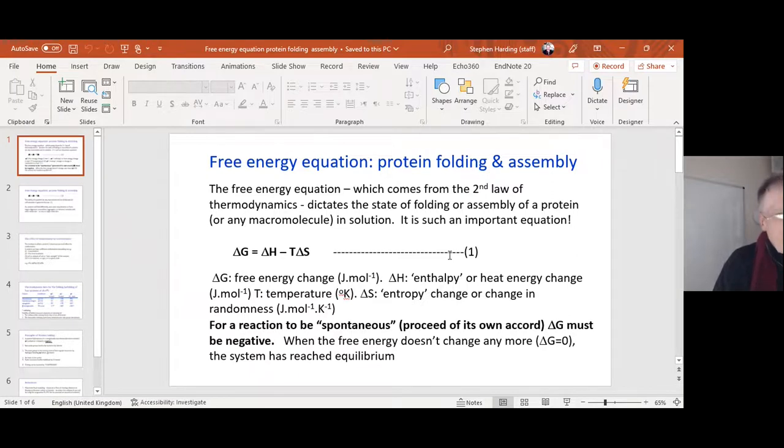So to go back to the free energy equation again: delta G equals delta H minus T delta S. For a reaction to be spontaneous or to react on its own accord, delta G must be negative. When the free energy doesn't change anymore, when delta G is zero, then the system has reached equilibrium.